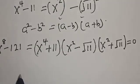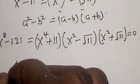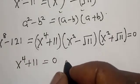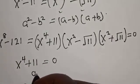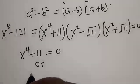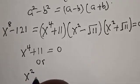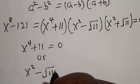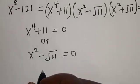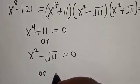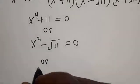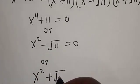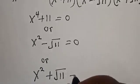From here we have three cases. Case one: x raised to the power 4 plus 11 is equal to zero. Or, case two: x squared minus the square root of 11 is equal to zero. Or, case three: x squared plus the square root of 11 is equal to zero.